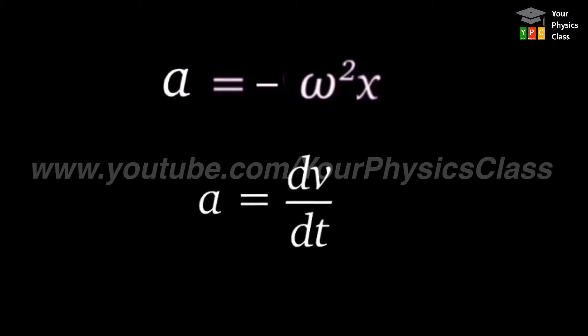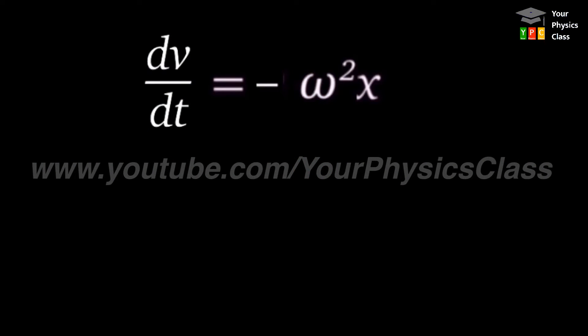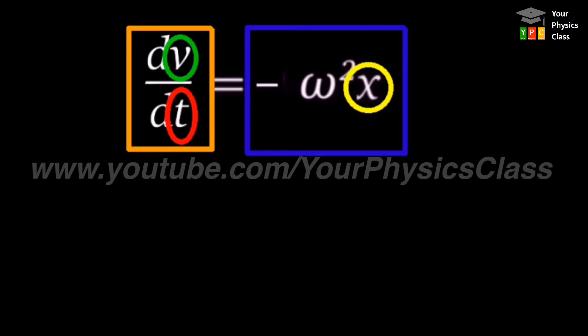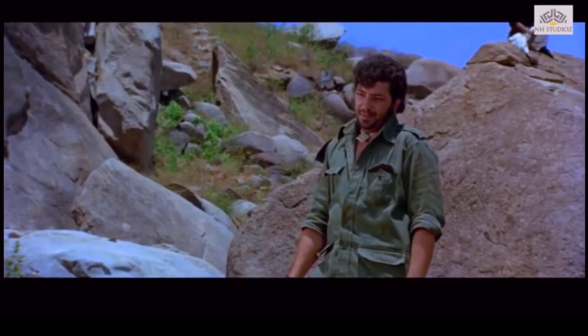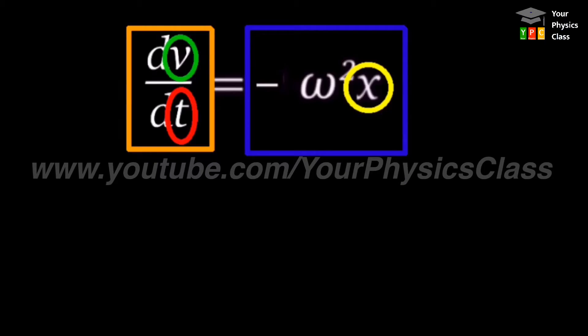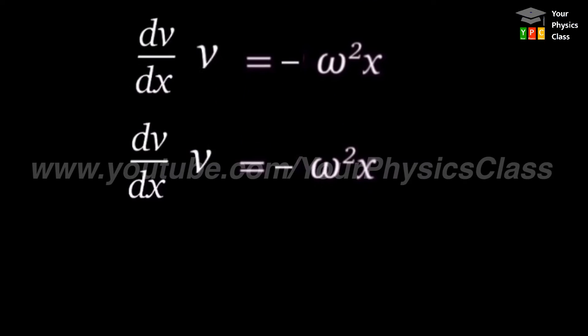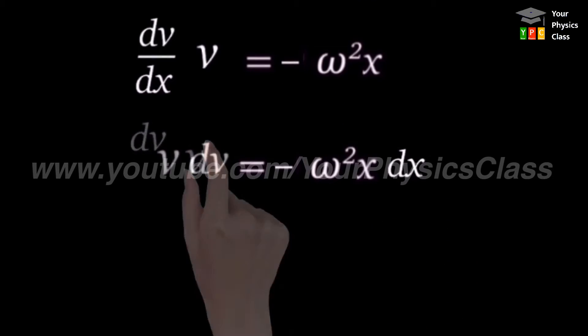Acceleration means derivative of velocity. Substituting this value in the previous equation, we can write dv/dt equals minus omega squared x. Here there are 3 variables and 2 sides, so we need to adjust two variables. We make a small arrangement: dx/dt means velocity, and shifting dx to the right side, we get v times dv equals minus omega squared x dx.